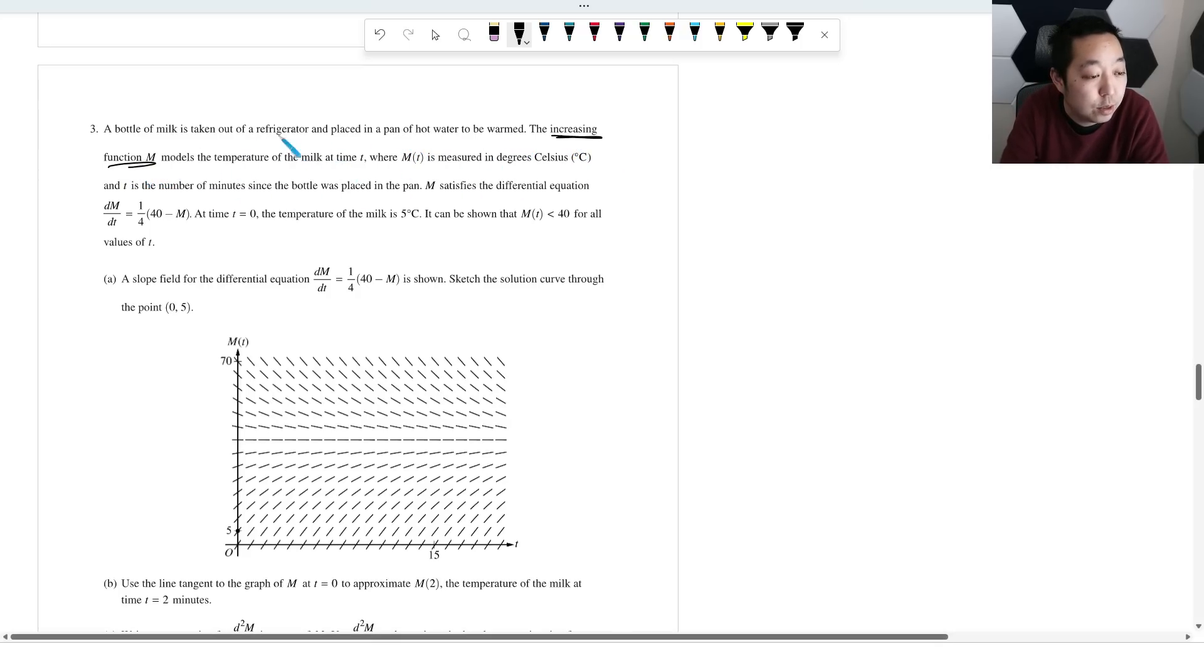so it's increasing. That's a keyword. They're telling you that M is increasing. That means M prime is positive. Where M of T is measured in degrees Celsius and T is the number of minutes since the bottle is placed in the pan. M satisfies the differential equation.